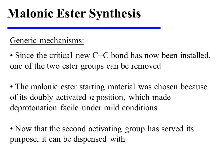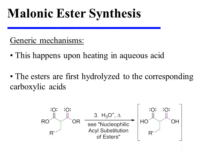Since the critical new carbon-carbon bond has now been installed, one of the two ester groups can be removed. The malonic ester starting material was chosen because of its doubly activated alpha position, which made deprotonation facile under mild conditions. Now that the second activating group has served its purpose, it can be dispensed with. This happens upon heating in aqueous acid — the esters are first hydrolyzed to the corresponding carboxylic acids.